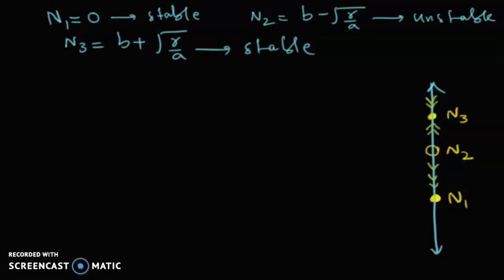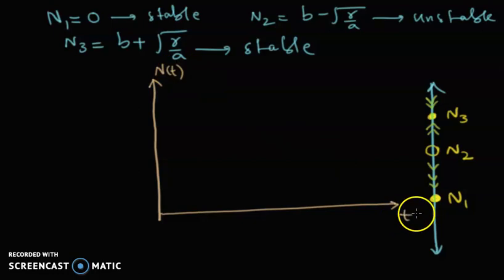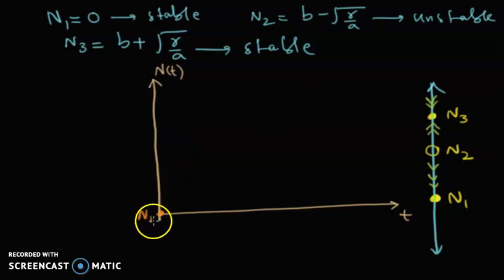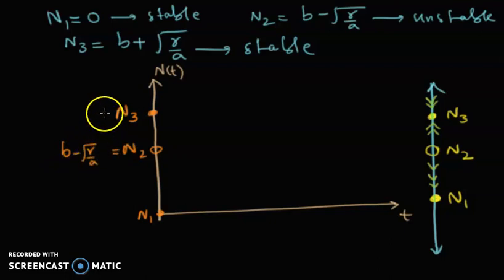Keeping this in mind, we can plot a qualitative sketch. Let's draw the axes — this is n(t) on the vertical axis and time on the horizontal axis. We have n1, n2, and n3 marked. This value should be b minus square root of r over a, and this value should be b plus square root of r over a.